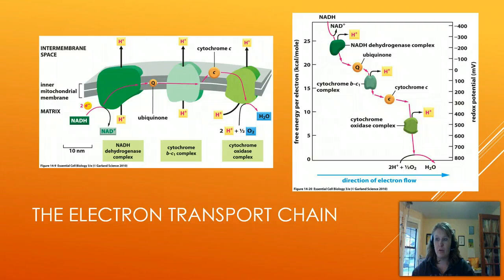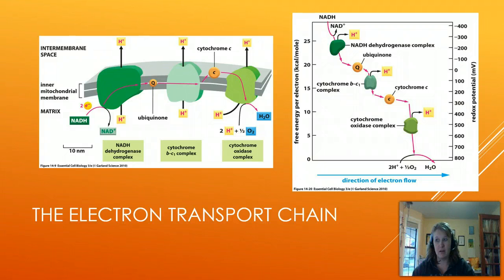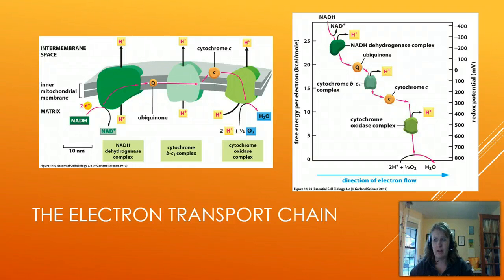Ubiquinone shuttles the electron over to the cytochrome BC1 complex, where the electrons are again shuffled around within the protein and more redox potential energy is released. The electrons are then passed to cytochrome C, which shuttles them to the final protein — the cytochrome oxidase complex. After the electrons are processed inside the cytochrome oxidase complex and all energy is removed from them, they are delivered to the final electron acceptor: molecular oxygen.